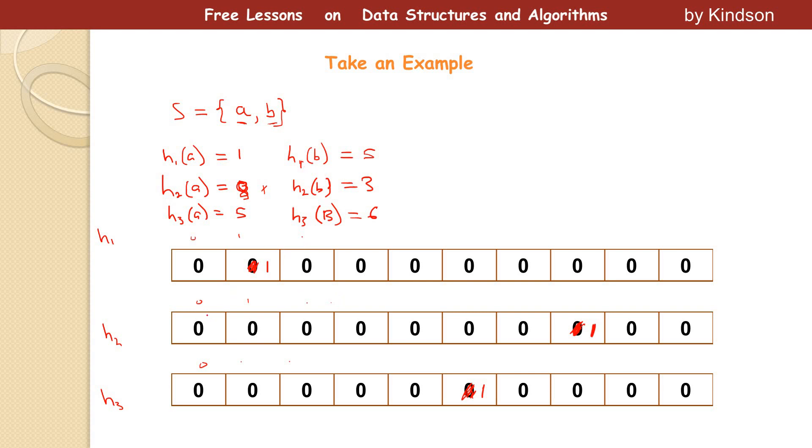So H1 of B, so this time we are talking about B. H1 of B gives us five, zero, one, two, three, four, five, and set it to one. H2 of B gives us three, zero, one, two, three. Zero, one, two, three, and set it to one.